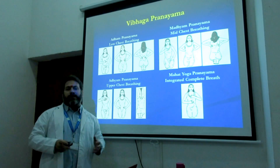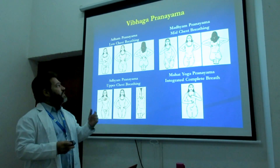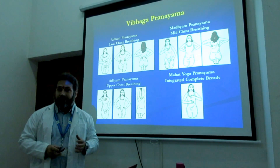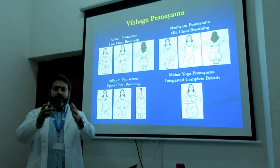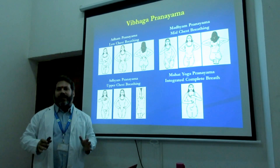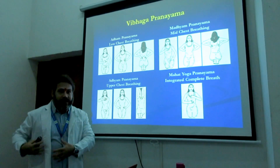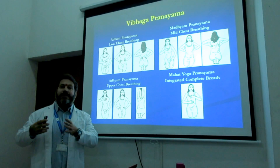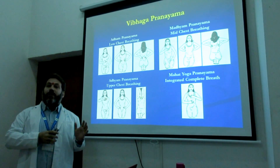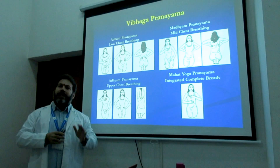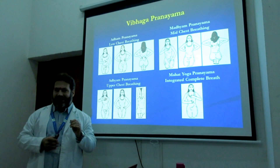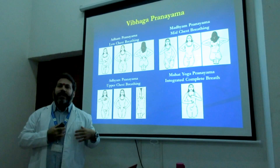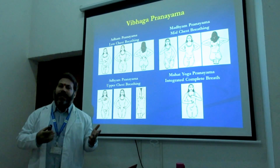One of the major questions that comes up the moment we start to do this is that many students get confused because they know, according to anatomy, that we have three lobes — a lower, mid and upper lobe in the right lung — but that we only have a lower and upper lobe in the left lung. Immediately a question comes to mind: how are we breathing into the mid section of the left lung?